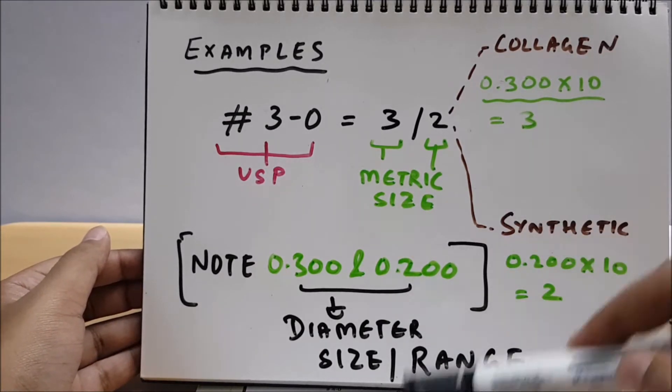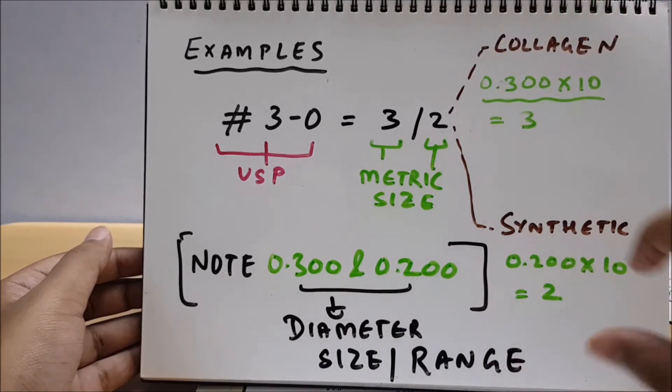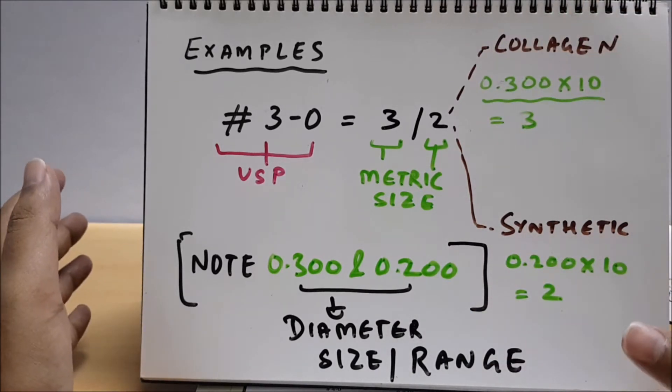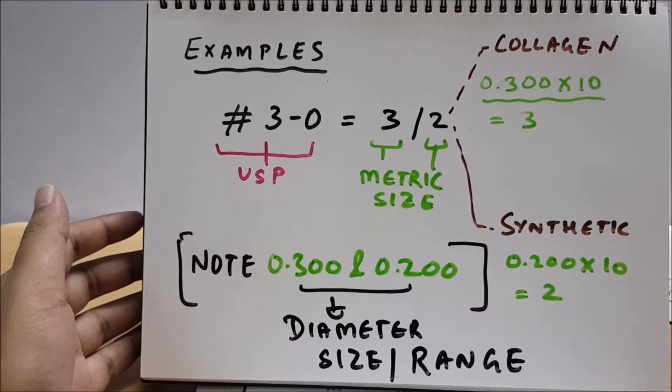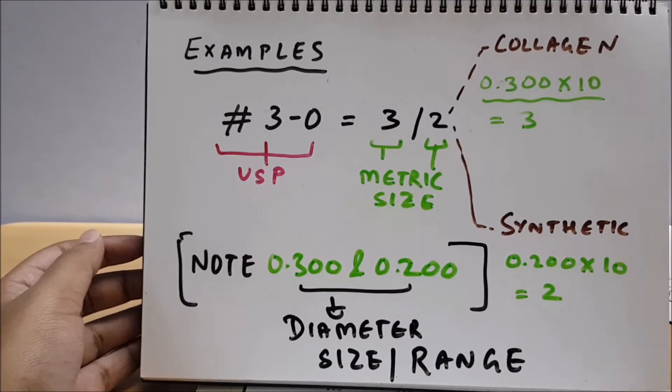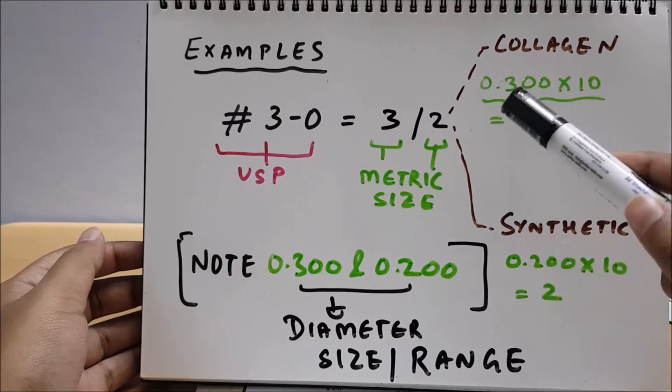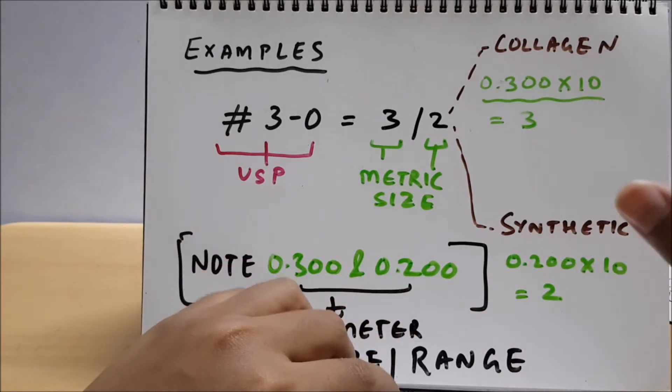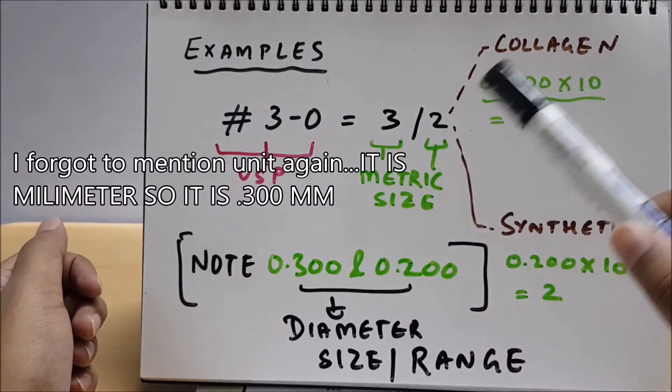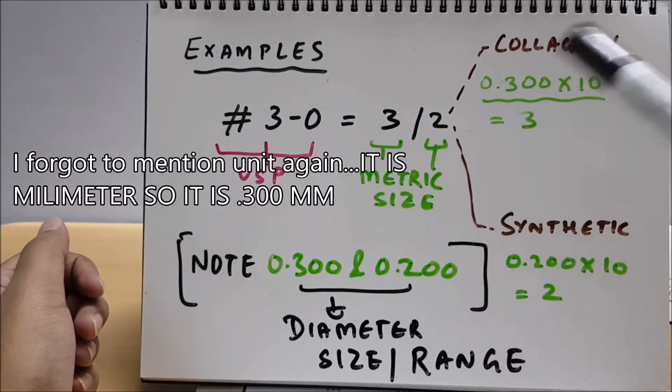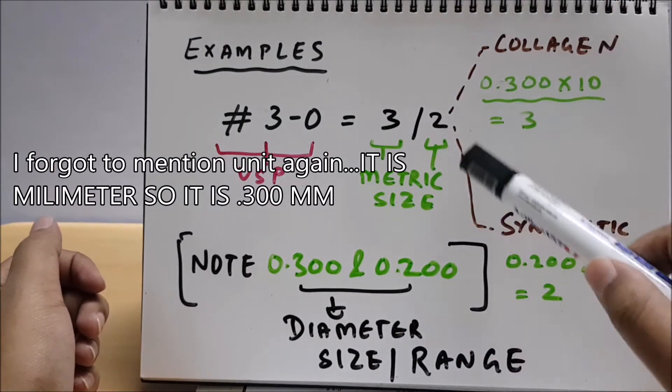See friends, all these things are completely defined by the company manufacturing them. We'll see the chart also that will really clear your confusing part of this. Let us see collagen: the diameter of that collagen suture is 0.300. So we'll multiply by 10 - it will come 3. That's why the metric size of collagen suture is 3, which is 3-0 in USP nomenclature.